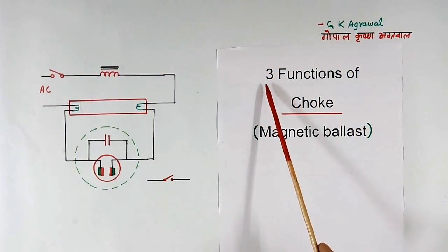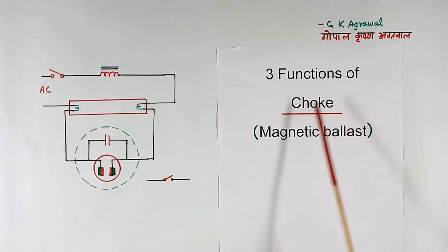Today I will explain 3 functions of magnetic choke used in fluorescent tube light. This choke is also called magnetic ballast.